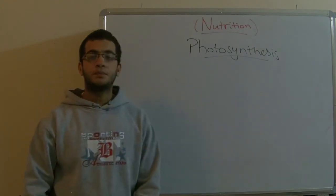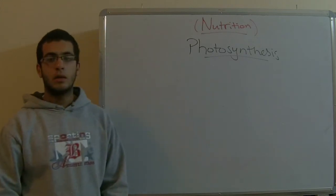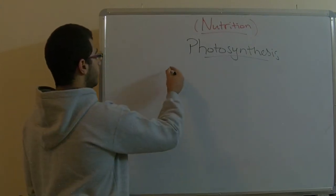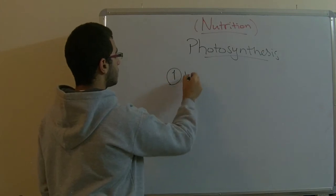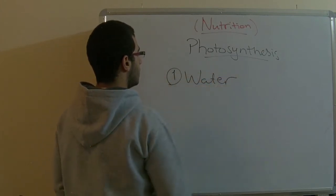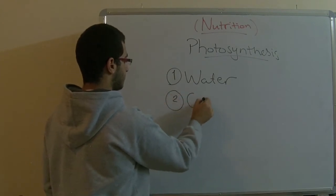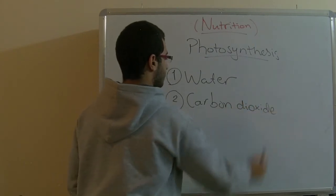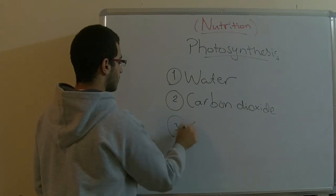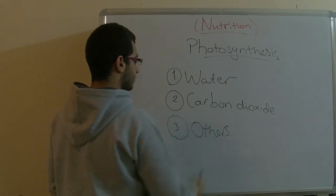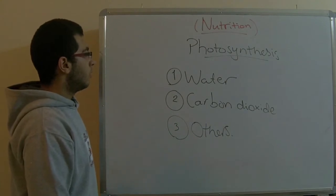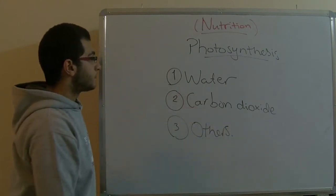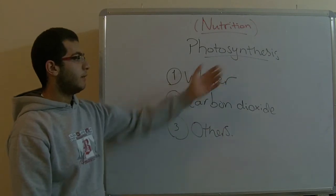We have to know what are the requirements that the plant needs to carry out the photosynthesis process. The first thing is, of course, water, and carbon dioxide, and others. We knew before that water and carbon dioxide are the main requirements that the plant needs to carry out the photosynthesis process.